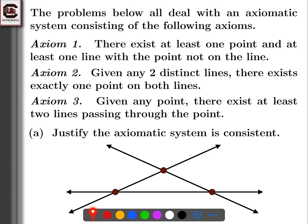Is that enough? Axiom one is still true. Axiom two is true. Given any point, there exists at least two lines passing through the point — and that's certainly true. So this is a model that satisfies all three axioms, and this justifies that the axiomatic system is consistent.